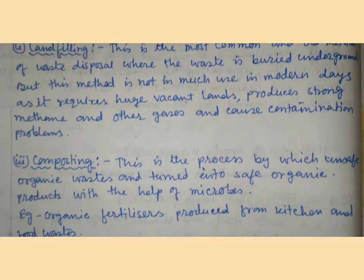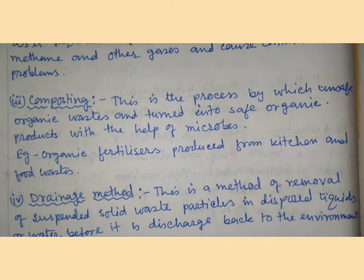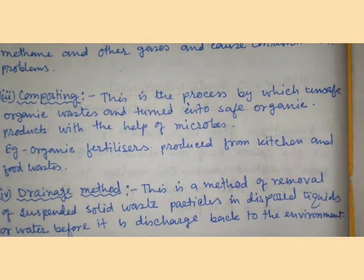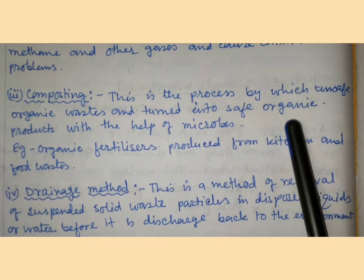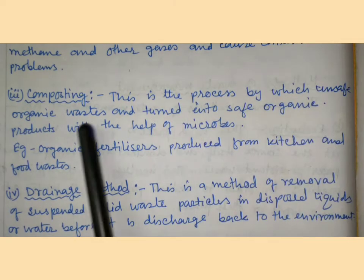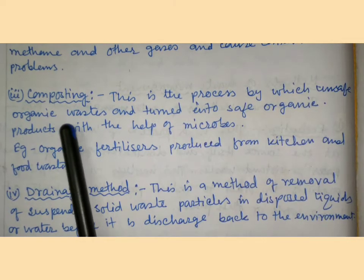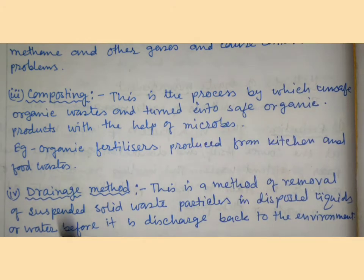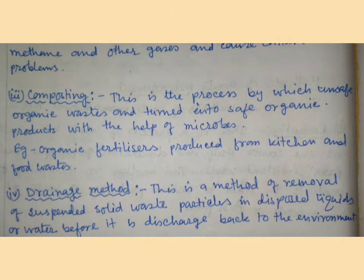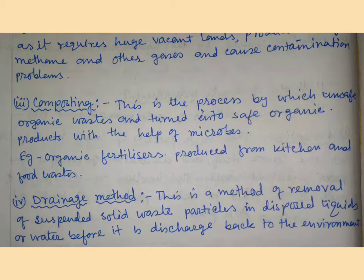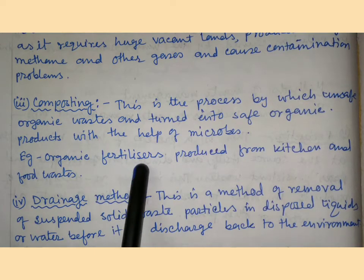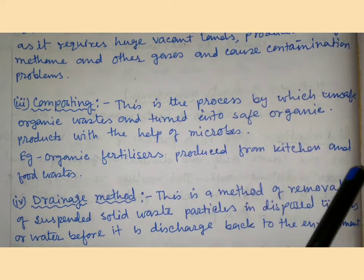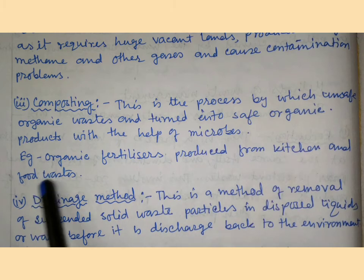Composting is the process by which unsafe organic waste is turned into safe organic products with the help of microorganisms. For example, organic fertilizer produced from kitchen and food waste.